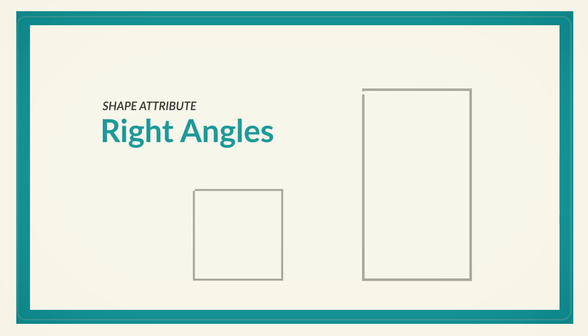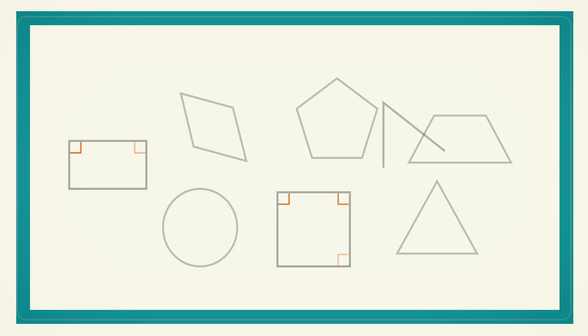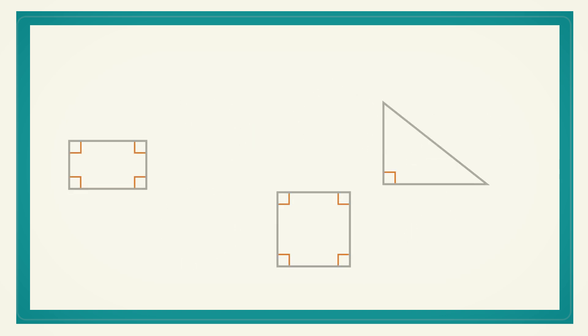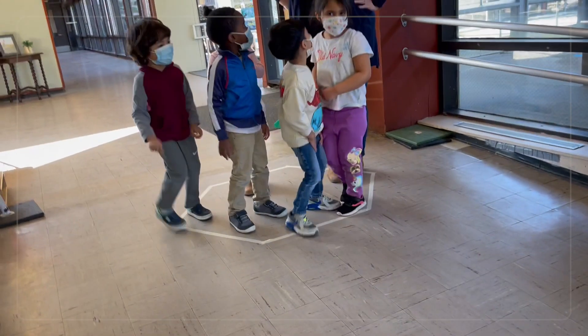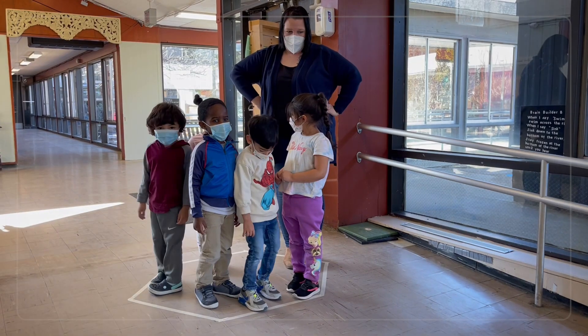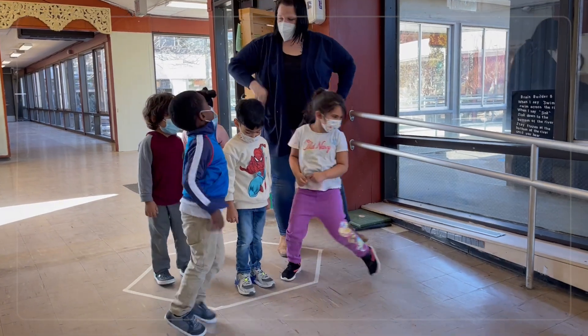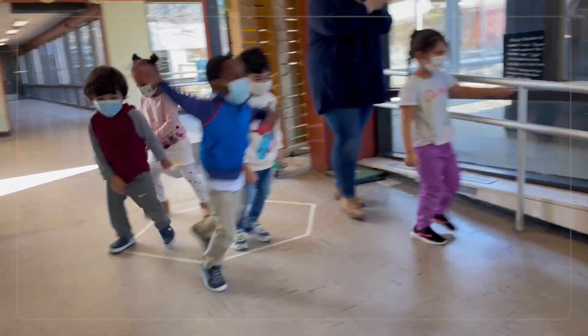Or your clue could be: find a shape with a right angle — an angle like the corner of a piece of paper. And they could find a square or rectangle, or maybe a triangle with a right angle. The great thing about this game is you can adjust the difficulty of your clues based on the group you're working with.